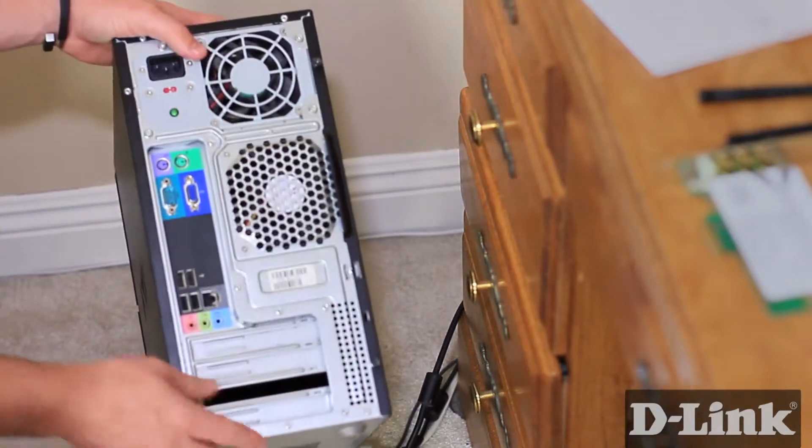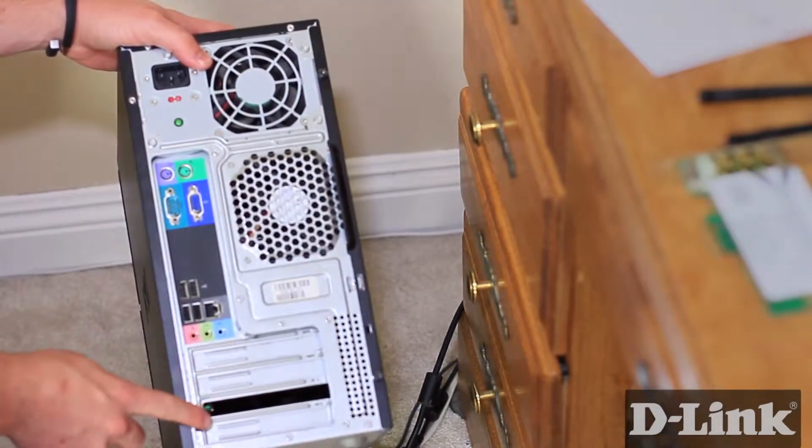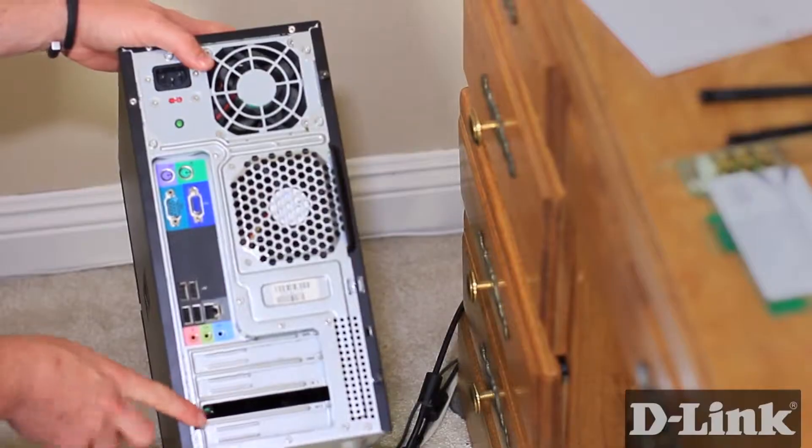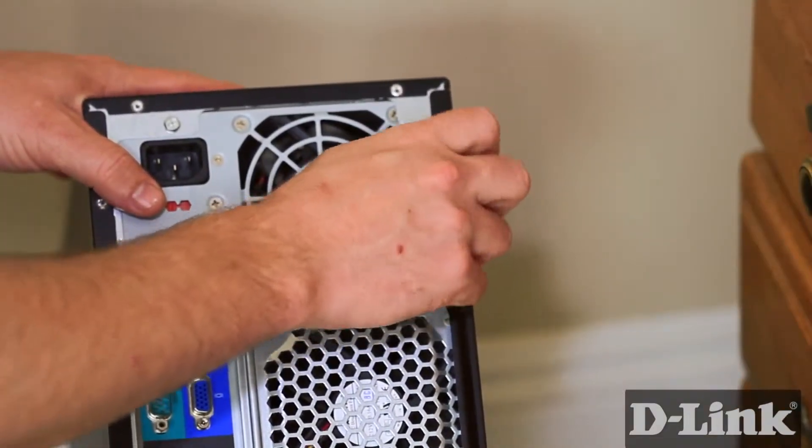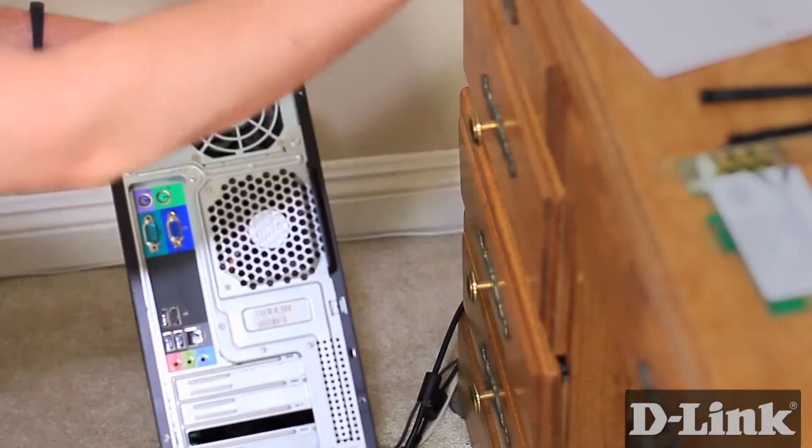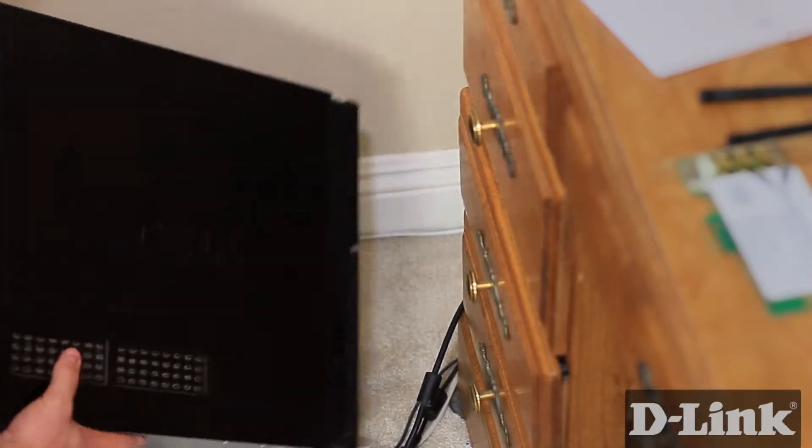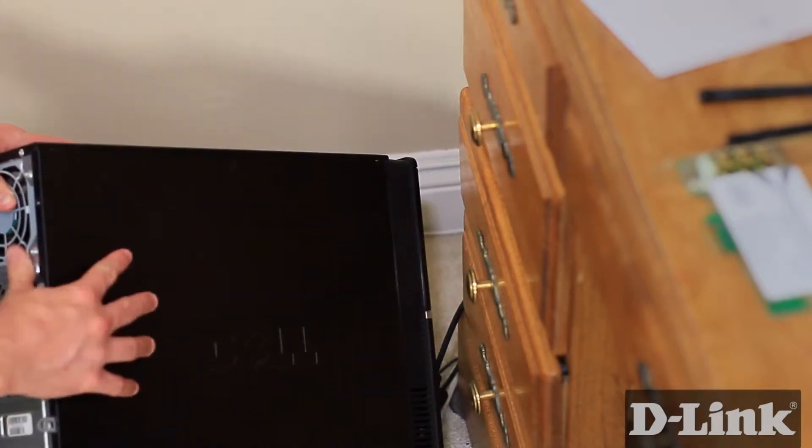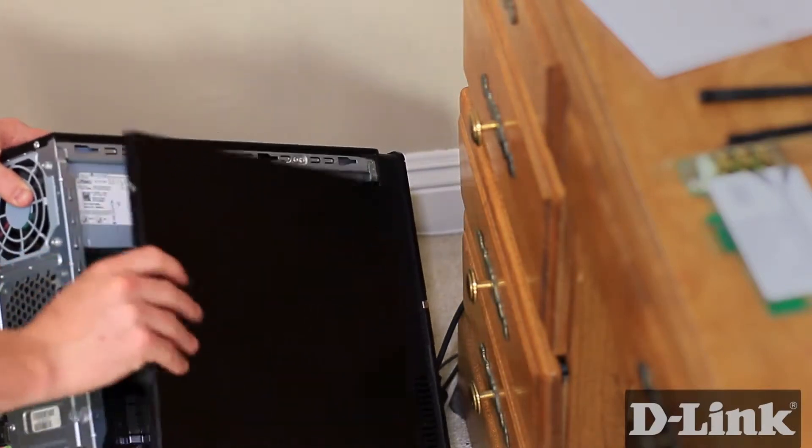On the back you'll see a handful of blank faceplates where you can add PCI cards, like the DWA-556. Now to open up the side panel, remove the screws. In many cases, PC manufacturers have switched to easy to remove thumb screws. Slide off the panel, and let's find an available PCI Express card slot.